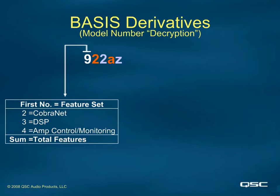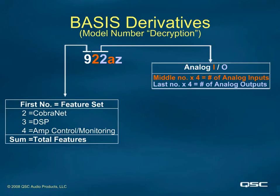Remember that bottom unit on the previous screen? It was a 522AA, a 500 series device. The only way to get a five for that first digit would be to add two and three — therefore it has CobraNet and DSP. A 922AA, on the other hand, has to have all three features to yield a nine for the first digit. The middle and last number tell us the number of analog inputs and analog outputs respectively. A 922AA doesn't have two inputs and two outputs — you have to multiply the middle and last numbers by four to get the actual number of IO channels.